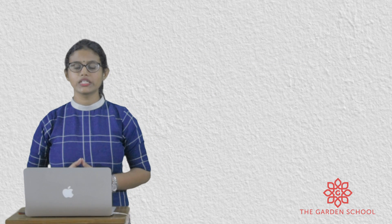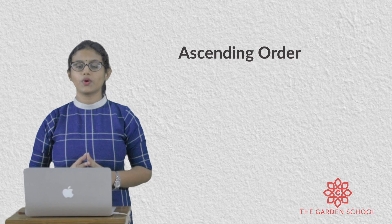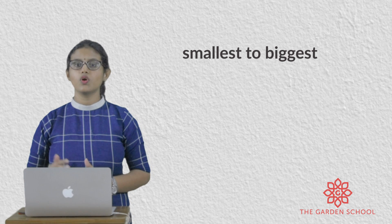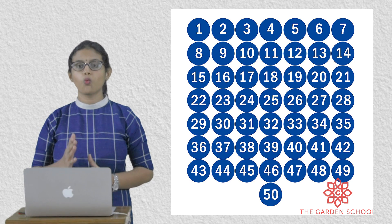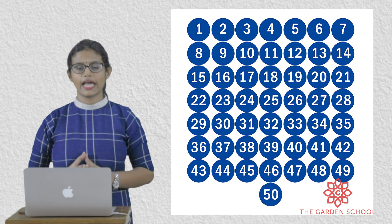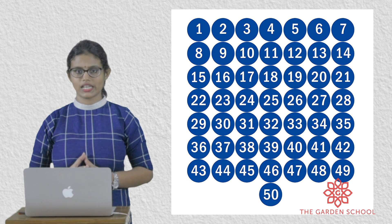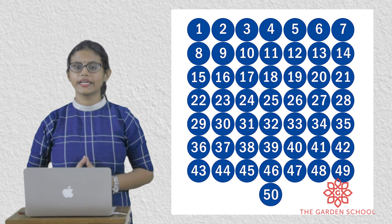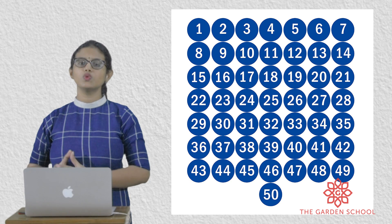Next we are going to see about ascending order. Ascending order means ordering numbers from smallest to biggest. For example, numbers from 1 to 50 — it is in ascending order, because it starts with number 1, which is the smallest number, and ends with 50, which is the biggest number. So ascending order starts with smallest to biggest.